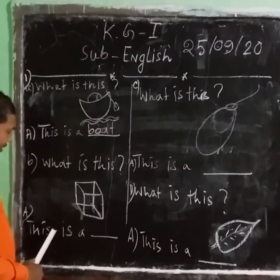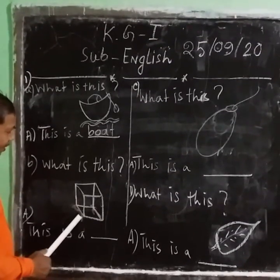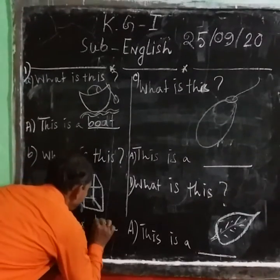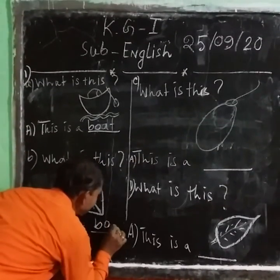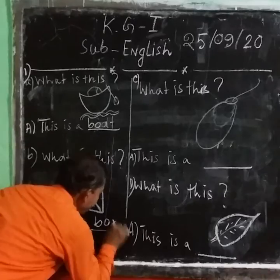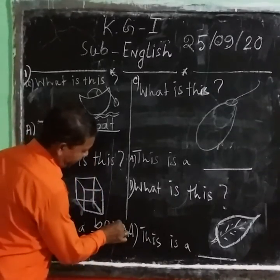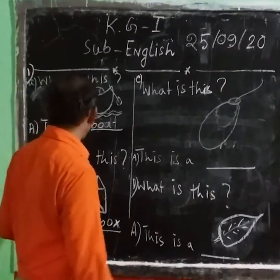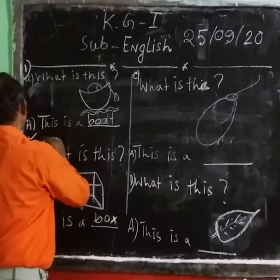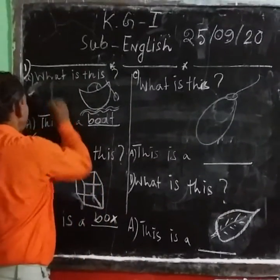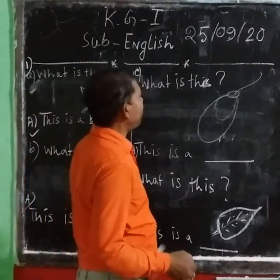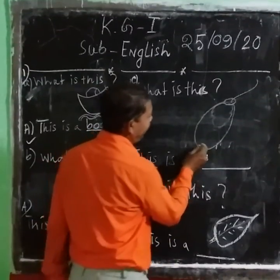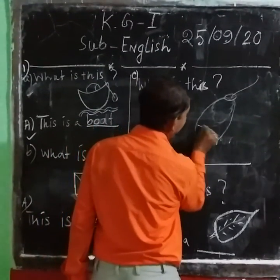This is a dash. This is a box. B-O-X. This is a box, you can have this and we'll use it.